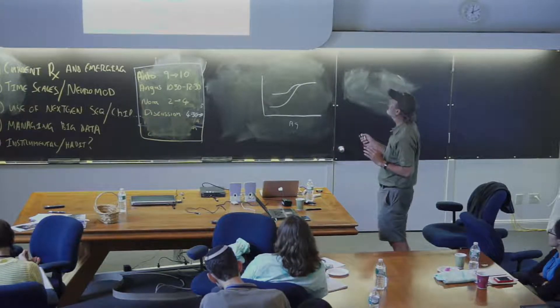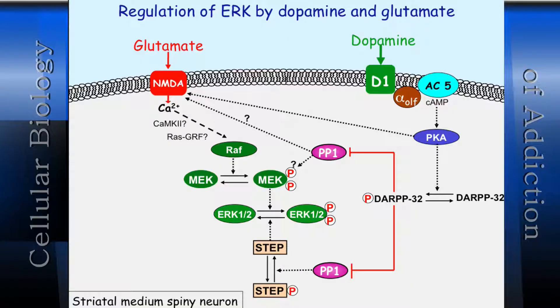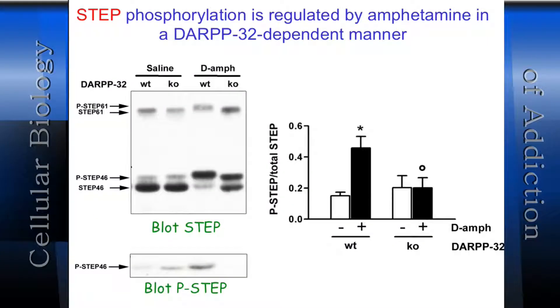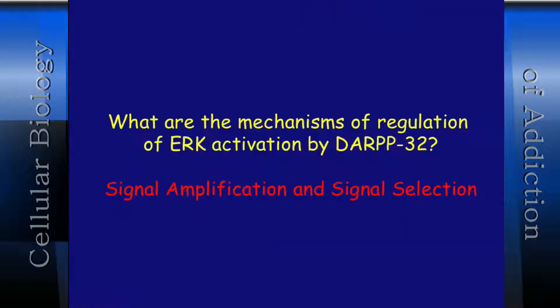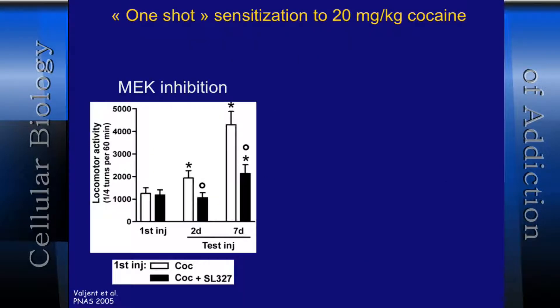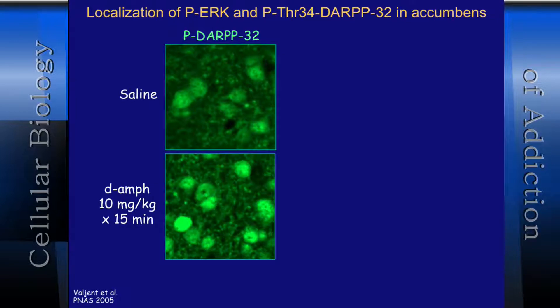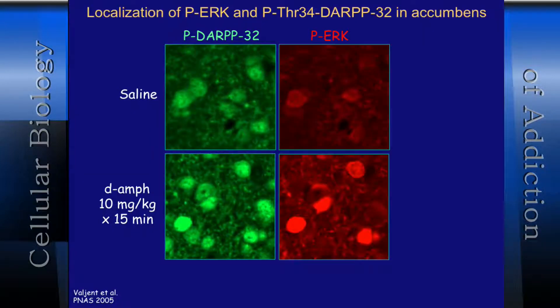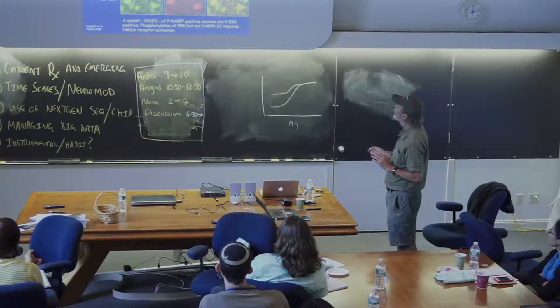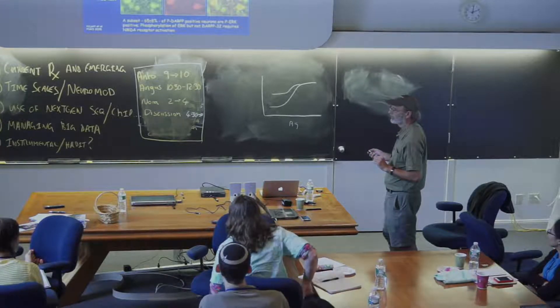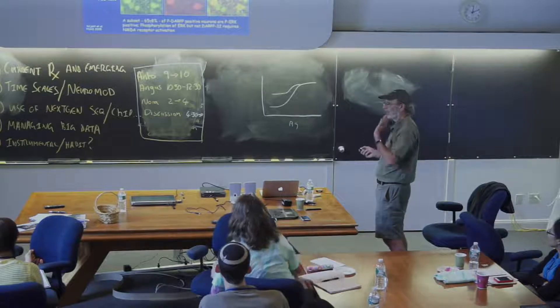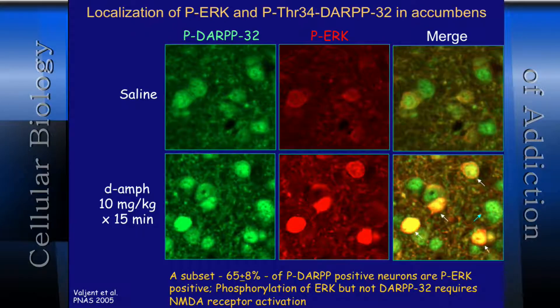Here we're really only talking about D1 receptors. The phospho-DARPP signals are only in D1 neurons — about half the neurons. About 65% of half of the neurons are being modulated if you do the math, and in fact the math works quite nicely.